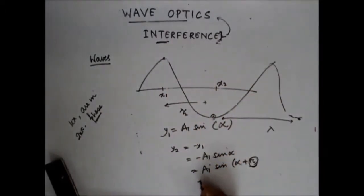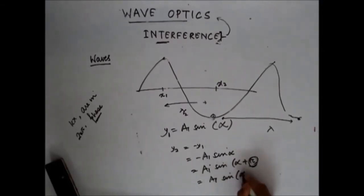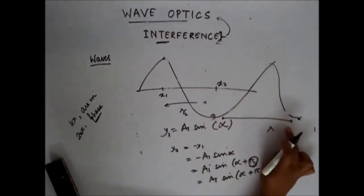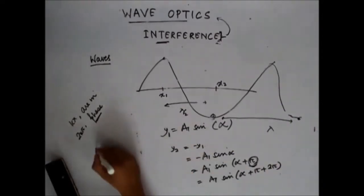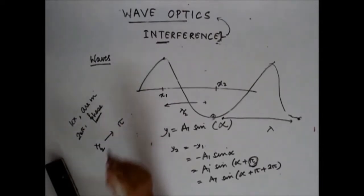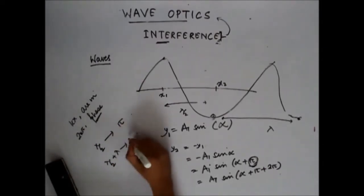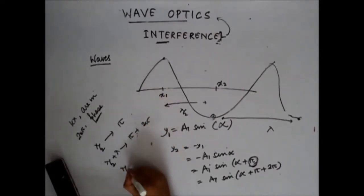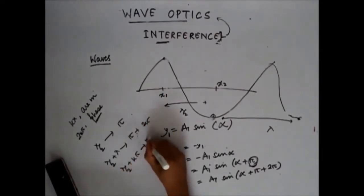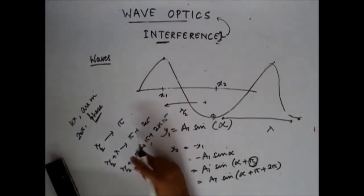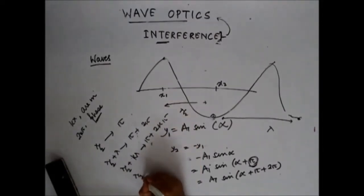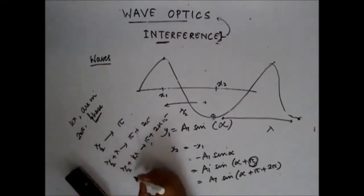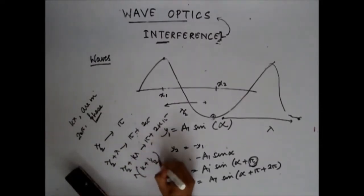So I can write this as a1·sin(π + ...). Again, a distance of λ corresponds to adding 2π in phase. So λ/2 equals adding π, and λ/2 + kλ equals adding π + 2kπ. Since kλ equals 2kπ, taking λ common, I get the phase as (2k+1)π.